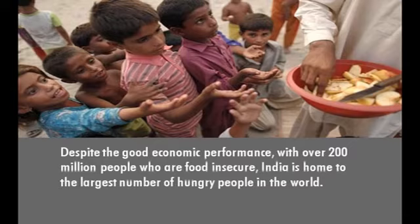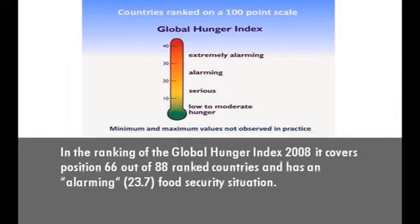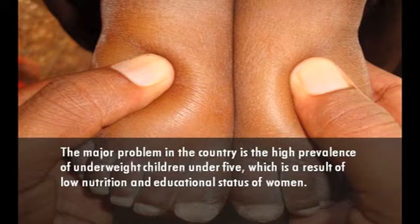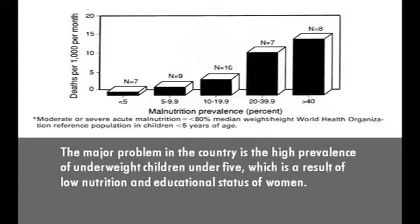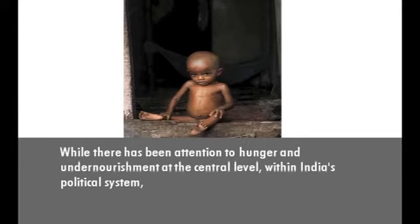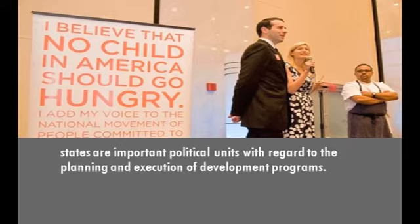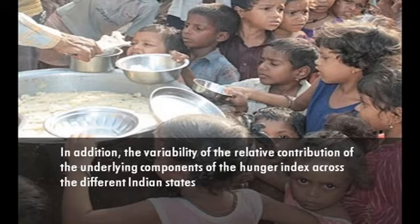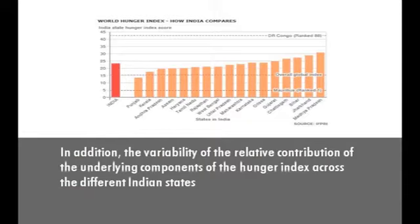In the ranking of the Global Hunger Index 2008, India covers position 66 out of 88 ranked countries and has an alarming 23.7 food security situation. The major problem in the country is a high prevalence of underweight children under five, which is a result of low nutrition and educational status of women. While there has been attention to hunger and undernourishment at the central level within India's political system, states are important political units with regard to the planning and execution of development programs. Thus, unpacking the hunger index at the level of the federal states is an important tool to build awareness of the disparities in hunger among them.